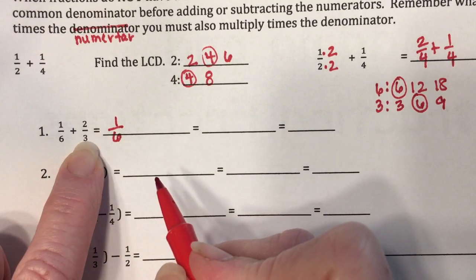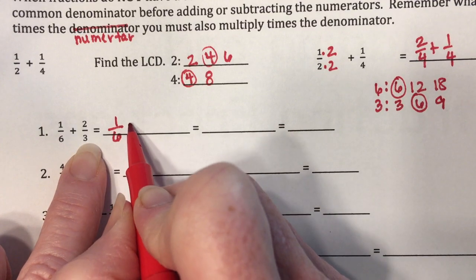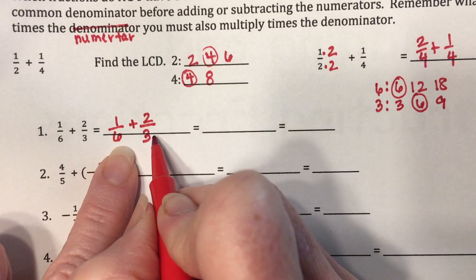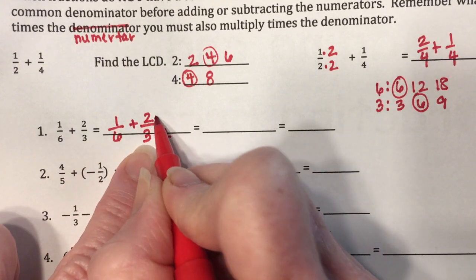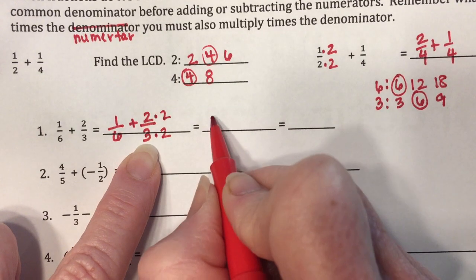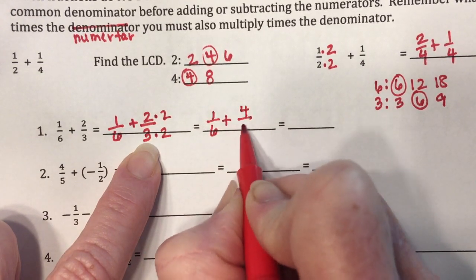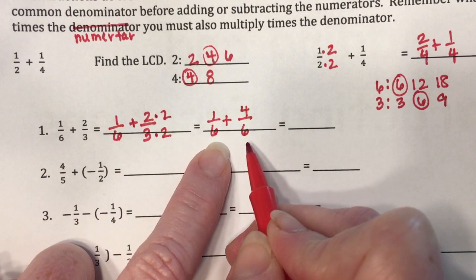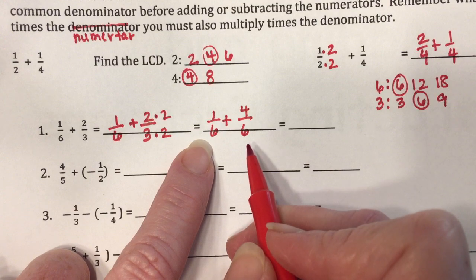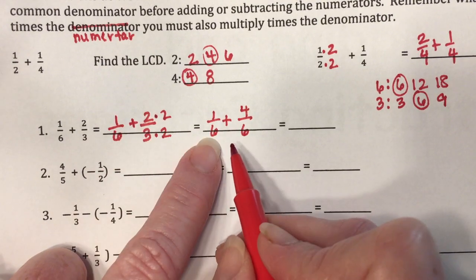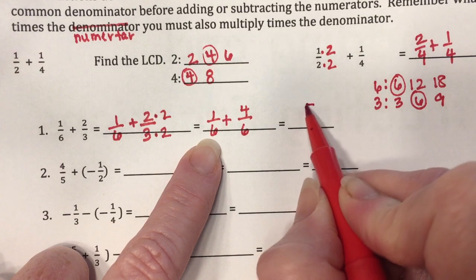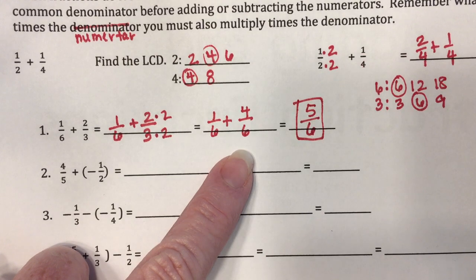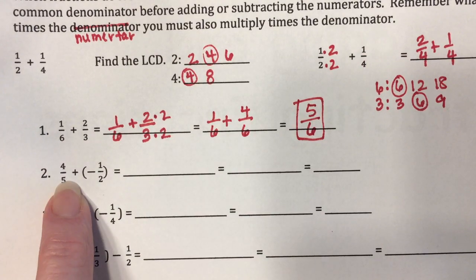The first fraction already has six so I'm not going to change it — I'll leave it as one-sixth. For the second fraction I need to change the three to a six: three times two equals six, so I multiply by two. If I do it to the denominator I have to do it to the numerator as well. So the new problem is one-sixth plus four-sixth. One plus four is five; keep the denominator the same: five-sixths, which is already simplified.